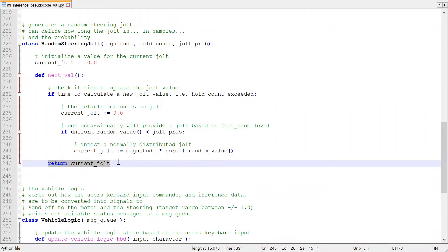But if it is time for a change, we need to calculate the new value. The default value is to effectively not apply a jolt. But based on the jolt probability level, we may occasionally inject one. The new jolt comes from a normal distribution, scaled by the magnitude. And finally, the method returns the current jolt value.